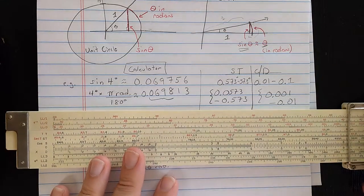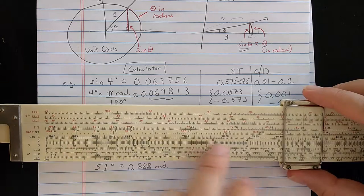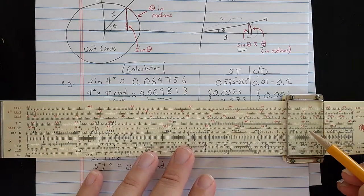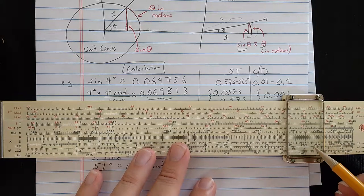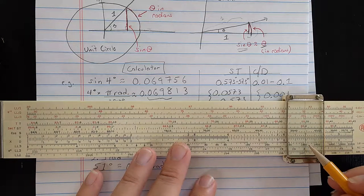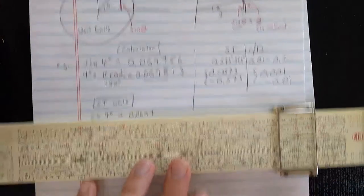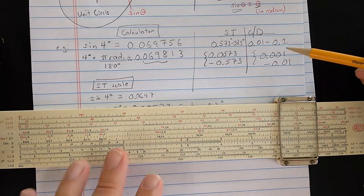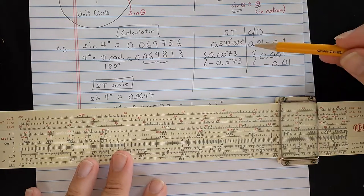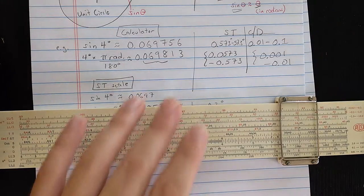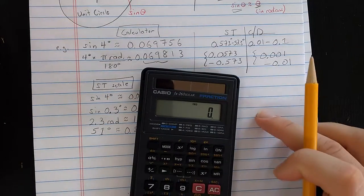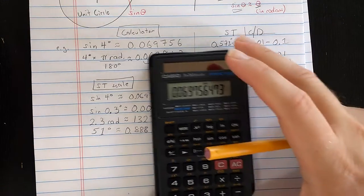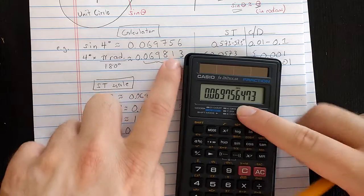So let's just go to four degrees on the ST scale here. Then what I see on the D scale is about 697. I'm doing this calculation here, 697. And I know that if I'm using ST in that range, it should be 0.0697. Let's compare that against the calculator's version. So I put four, I do sine, I get 697. I've copied two more digits here.